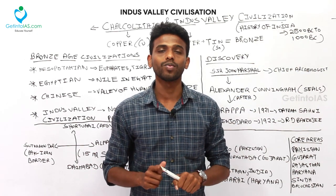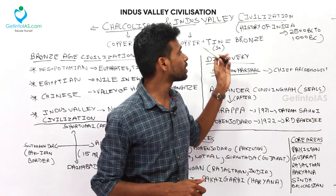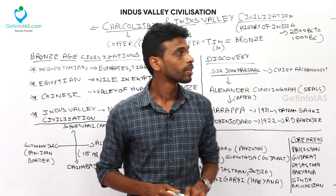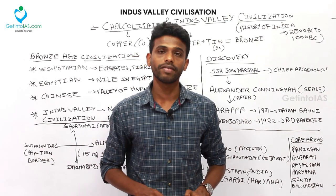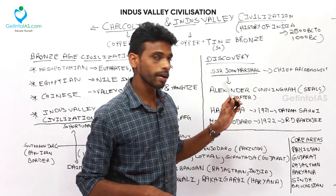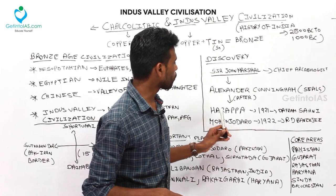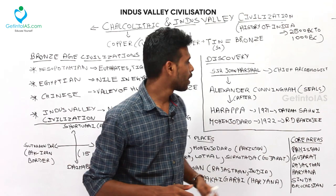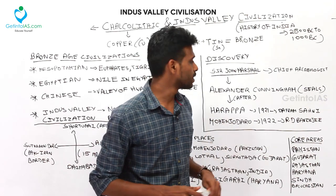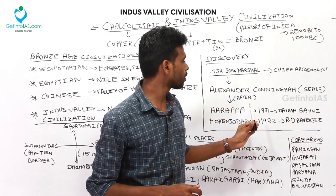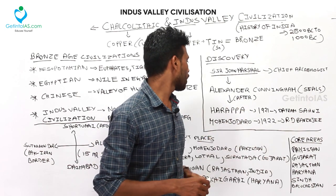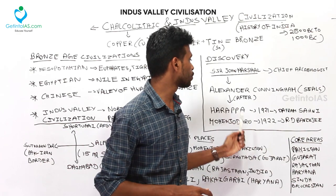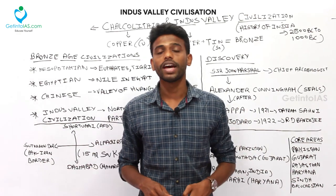The discovery established India as one of the oldest civilizations in the world, dating back to 2500–2000 BC. This makes the Indus Valley Civilization an important part of the UPSC examination, as it is the first civilization in India. Harappa was the first site to be discovered by Daya Ram Sahni in 1921, and Mohenjo-daro was discovered by R.D. Banerji in 1922.